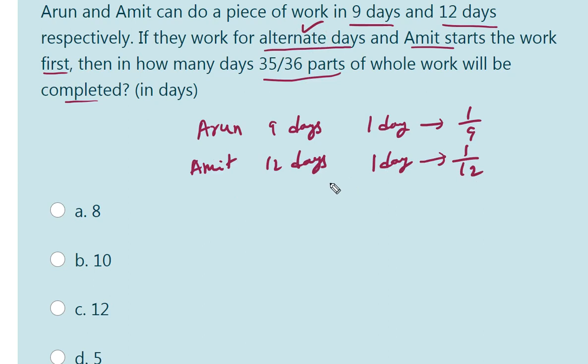So, now let us calculate their combined work. If both can do the work in 1 day, their work is 1 by 9 plus 1 by 12. LCM is 36, 4 plus 3. 7 by 36 work they do.